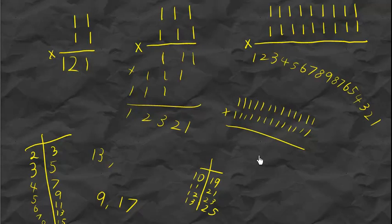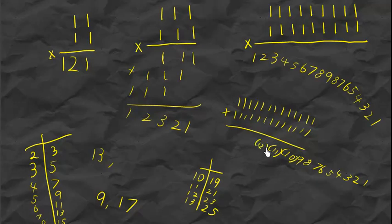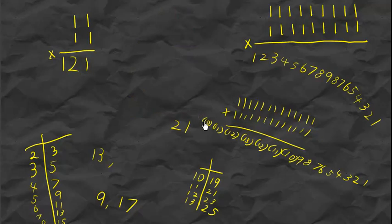To work this out, the pattern goes: one, two, three, four, five, six, seven, eight, nine, ten, eleven, twelve, thirteen, twelve, eleven, ten, nine, eight, seven, six, five, four, three, two, one. Pretend these values like ten, eleven, twelve, thirteen are digits for now.